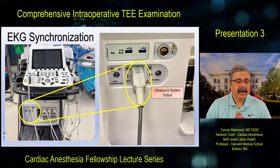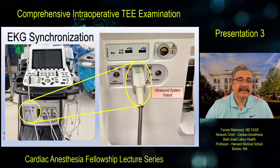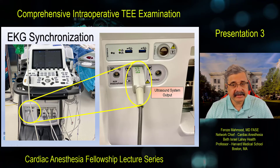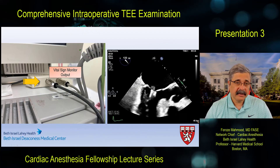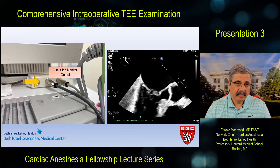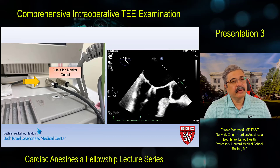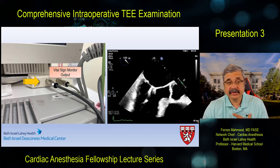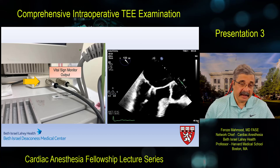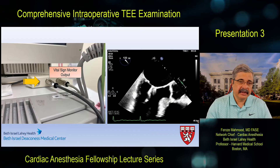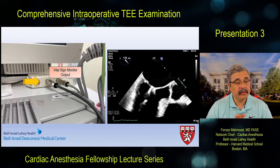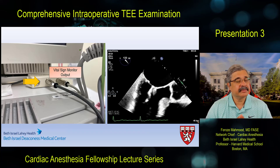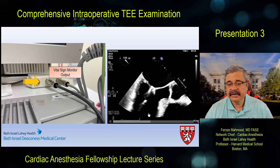Regarding the EKG: the location of the EKG sync cable is different on different systems. On the GE system used in the operating room, the EKG input is right in front of the machine. The EKG does not come automatically — you have to slave this monitor directly via phono jack to one of your monitors. The machine also has its own EKG sync cables, but that creates cable clutter in the OR. We choose to use the phono jack cable to slave the EKG signal from the patient monitor directly onto the TEE system.